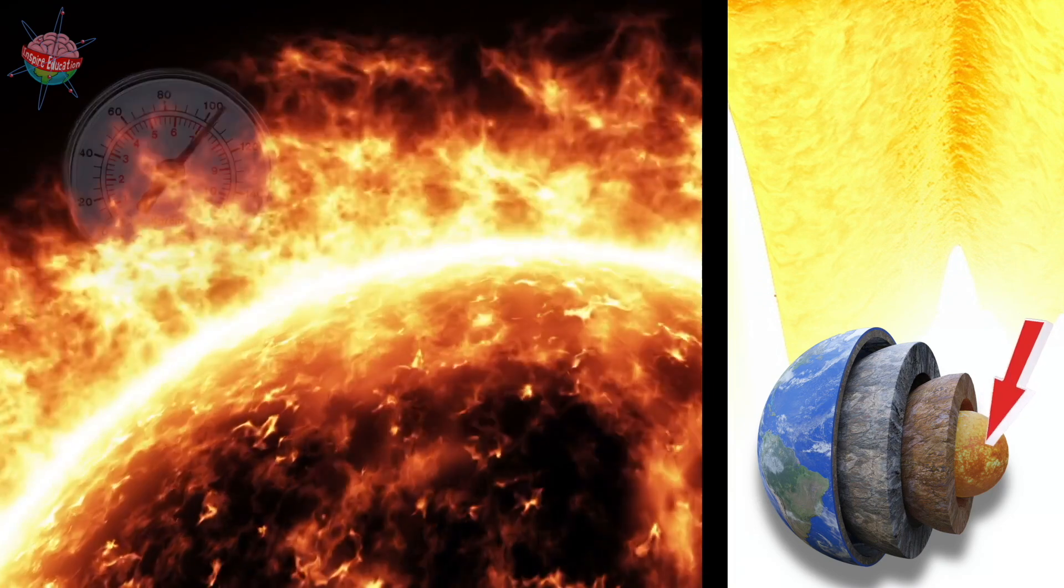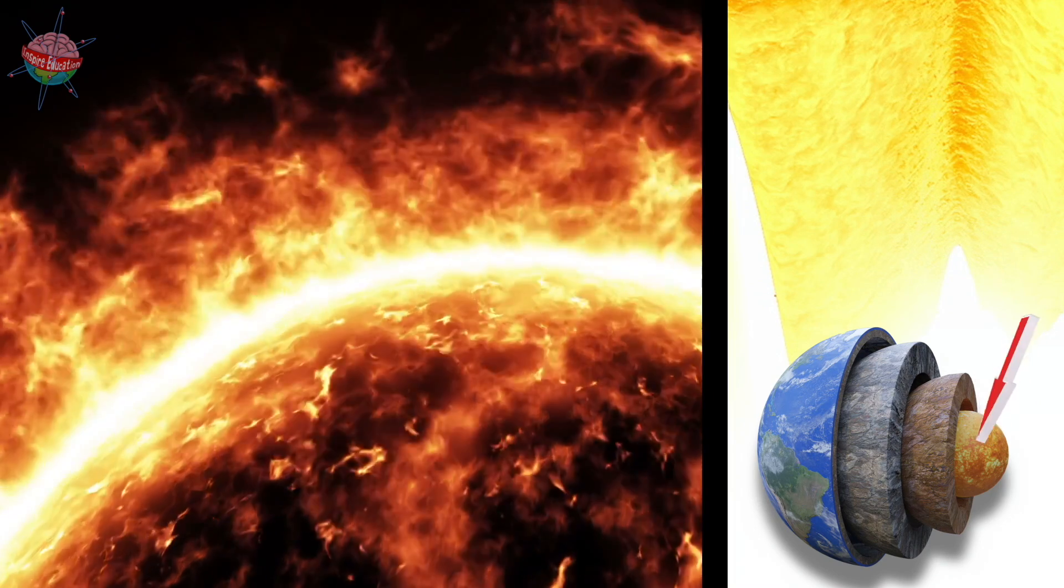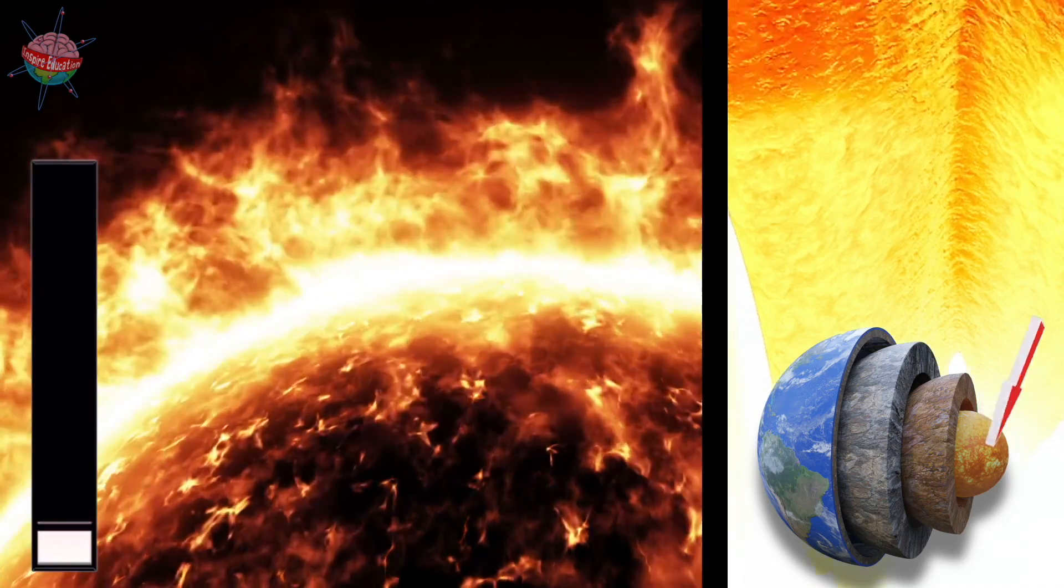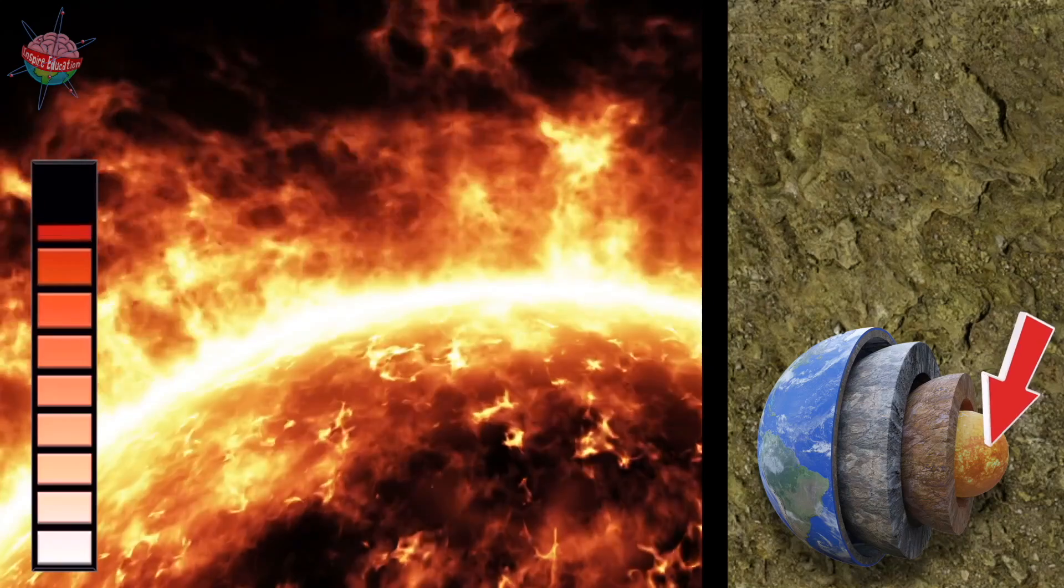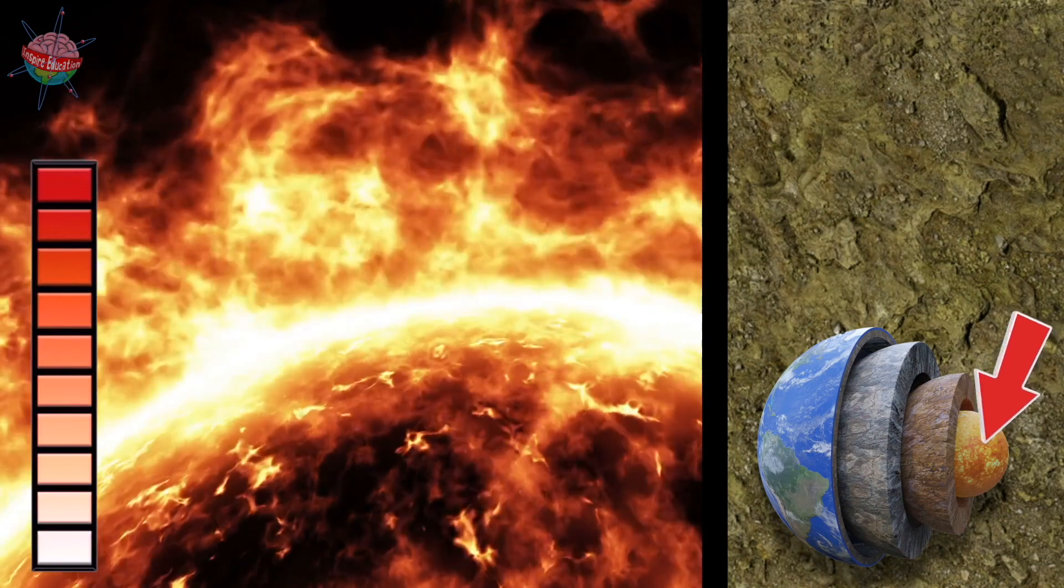At 6,000 degrees Celsius, it is the hottest part of the Earth, over 270 times hotter than the crust and hotter than the surface of the Sun.